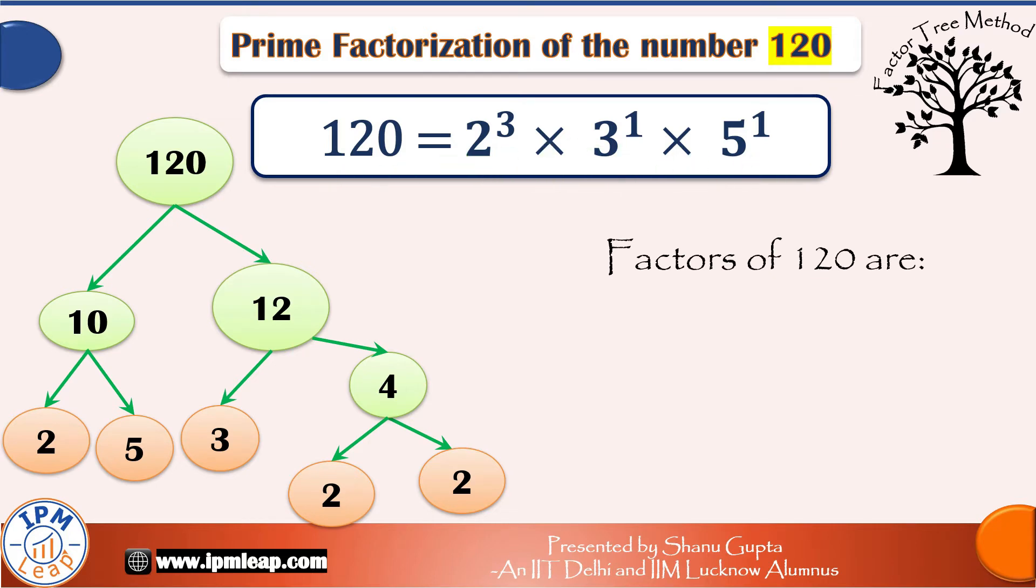This will guide us when we are guessing the factors of 120. One useful tip here, you need to find out only the initial few factors till the approximate square root of this number 120. Square root of 120 is close to 11. So let us see which numbers from 1 to 11 are factors of 120.